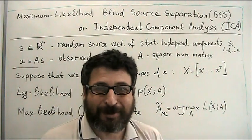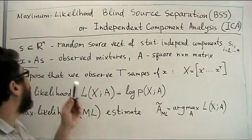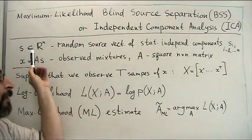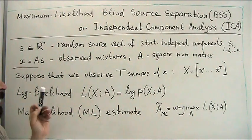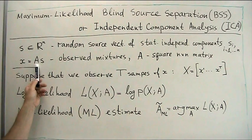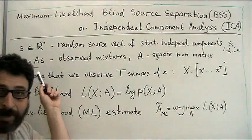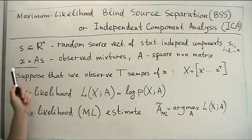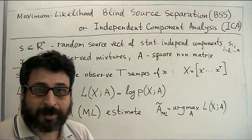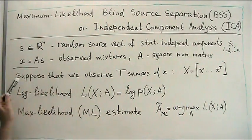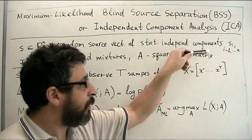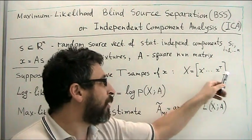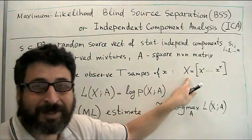The simplest formulation is the following. We have a vector of n independent sources, statistically independent sources. And we mix them by some unknown quadratic matrix A. And x are our observations. Suppose that we have t samples of vector x, and we put them all together to this large matrix capital X.